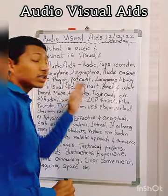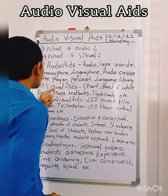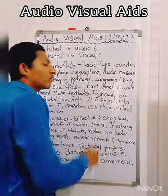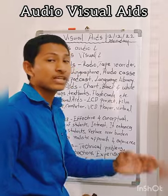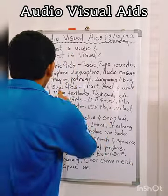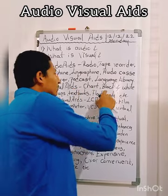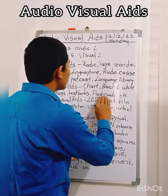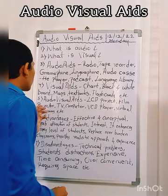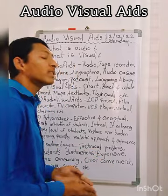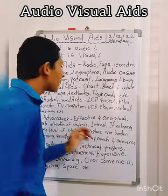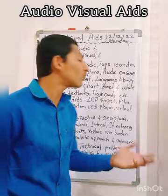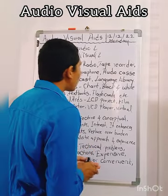Visual aids are what we learn by seeing. Visual aids include charts, black and white boards, maps, textbooks, and flashcards. With the integration of audio and visual aids, the gadgets and machinery we use include LCD projectors, film projectors, TV, computers, and VCD players.